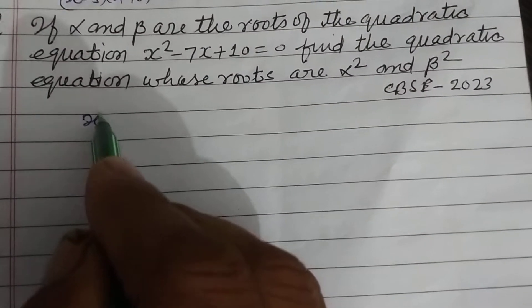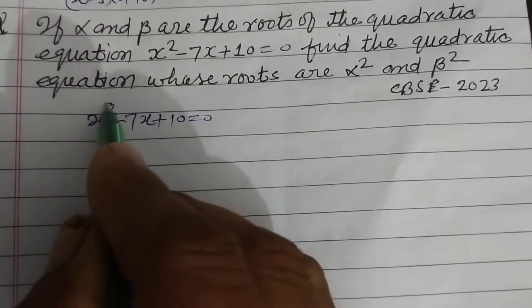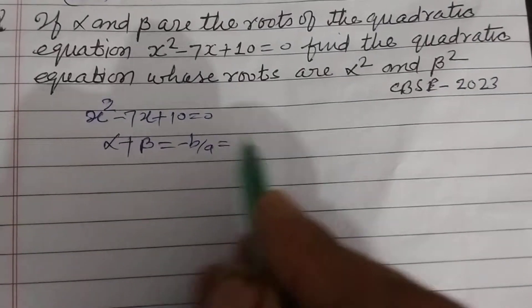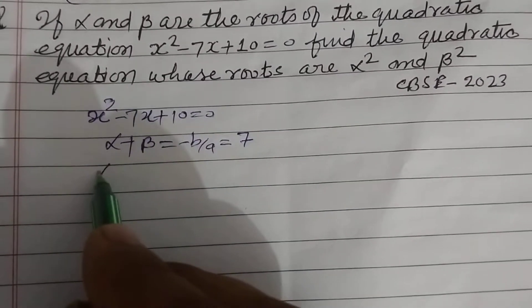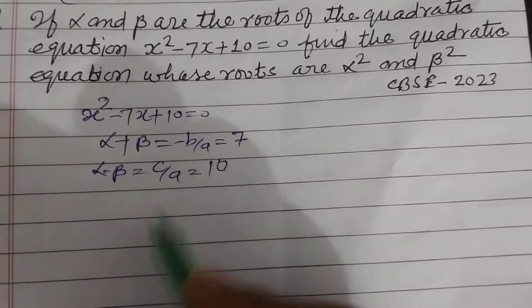The given equation is x² - 7x + 10 = 0. So α + β = -b/a = 7, and αβ = c/a = 10.